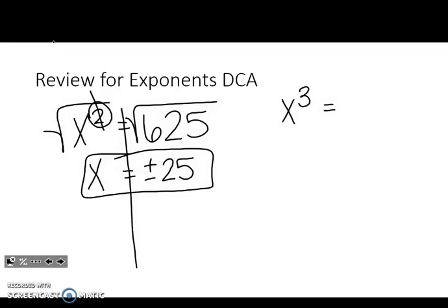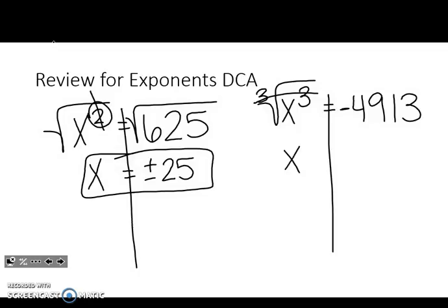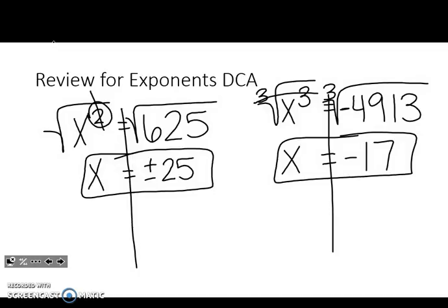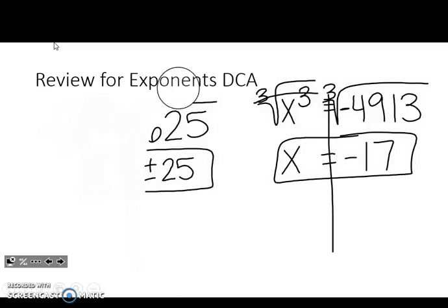All right, and one more cubed problem. So the opposite of cubing the x is cube rooting the x. That gets rid of the exponent. So what I do to one side, I have to do to the other. So we're going to type in 3, second, hit the caret button. And since it's a negative 4,913, make sure you put the negative in there. And on this one, whatever answer I get is what the final answer is. Hopefully you remember that from a couple months ago. But that is going to be on our DCA on Tuesday.